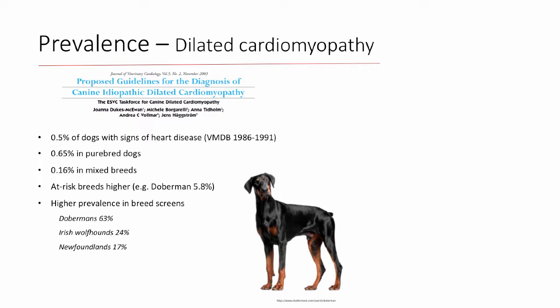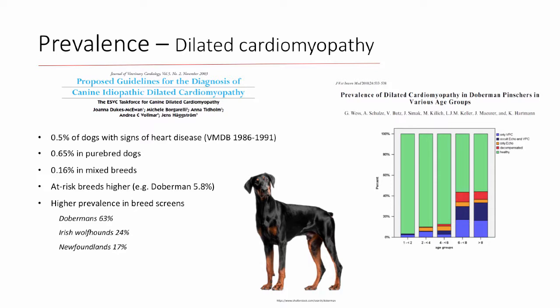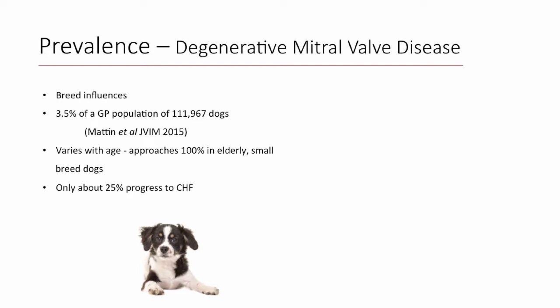This study also shows that the incidence of DCM in the Doberman breed increases with age. The green area represents healthy Dobermans, and the colored areas are varying degrees of DCM diagnosis — either by arrhythmias, poor function, or both. The incidence of disease goes up as dogs get older, with very few being diagnosed at one to two years of age. So our index of suspicion for disease needs to increase as the age of the presenting patient increases.